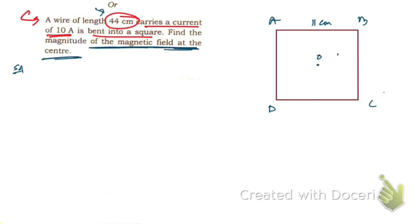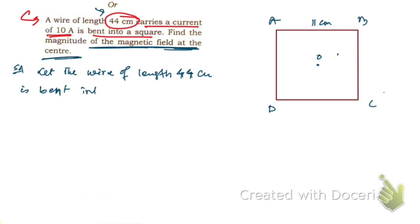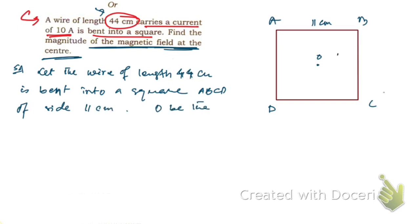Let O be the center of the square. The wire of length 44 centimeters is bent into a square ABCD of side 11 centimeters. Since each side is 11 centimeters, the perpendicular distance from the center O to each side — let's call it OM — must be 11 divided by 2, which is 5.5 centimeters.